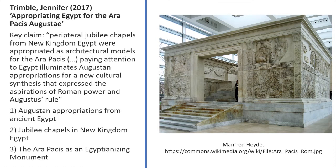Trimble's key claim is that peripheral jubilee chapels from New Kingdom Egypt were appropriated as architectural models for the Ara Pacis. She argues that paying attention to Egypt illuminates Augustan appropriations for a new cultural synthesis that expressed the aspirations of Roman power and Augustus's rule — that by looking at this process of appropriation we can understand new dynamics of the age of Augustus and ideas of Roman power, something very important to the study of this module overall.